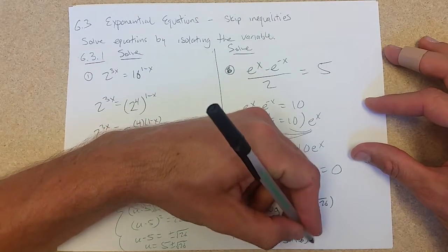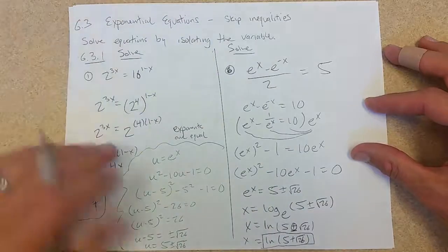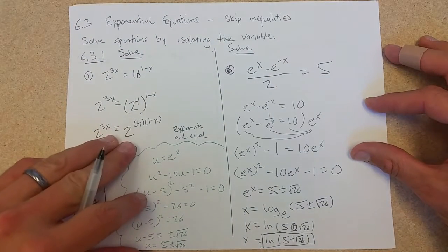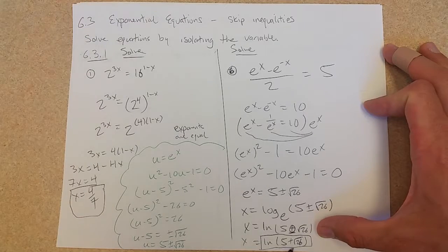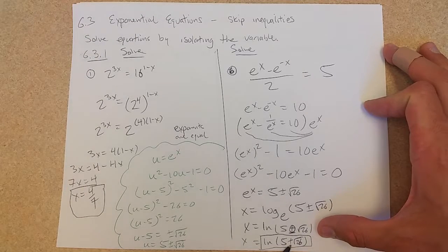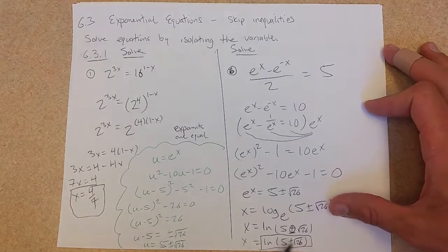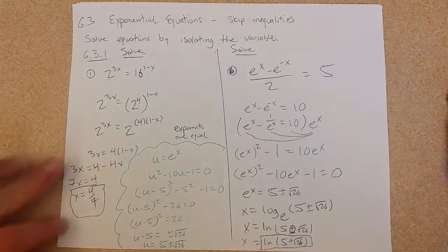So my final answer right here, just ln 5 plus square root 26. Don't try to simplify this further. This is addition inside of a log, not multiplication. So there's no way to simplify this down.